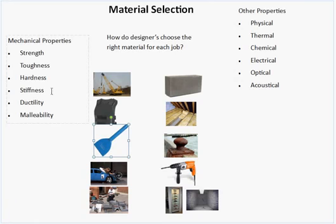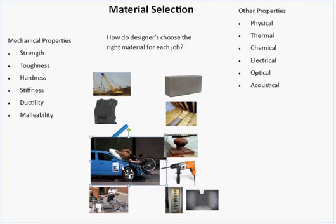The next property is stiffness. There's a picture of a crash test dummy going into the front of a car. Cars are made rigid enough structurally, but the actual surface of the material is pliable enough to absorb any impact with a pedestrian, cyclist, or motorcyclist. So you want the material to be rigid and stiff but also able to absorb energy.